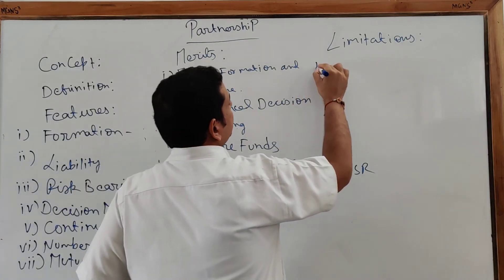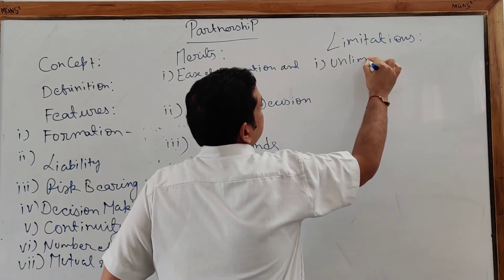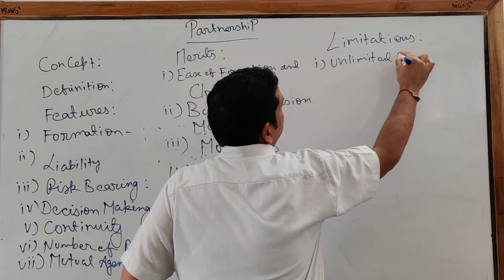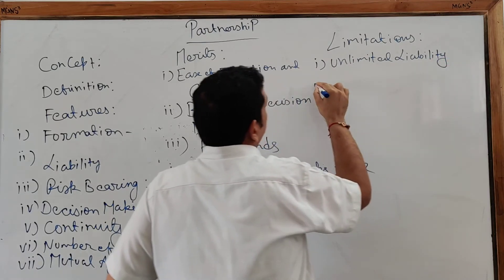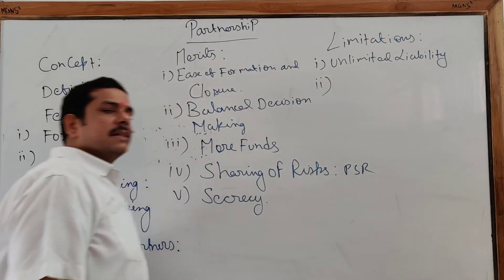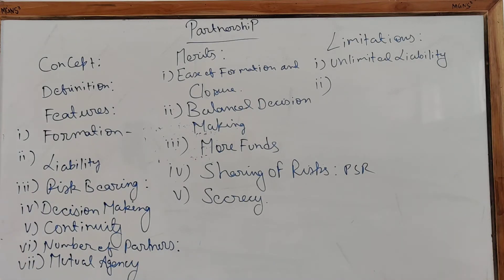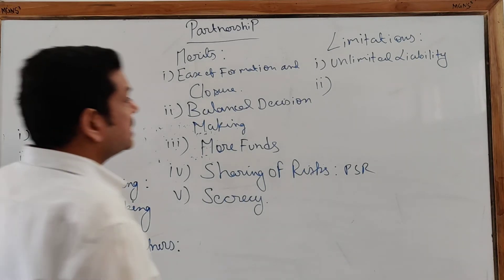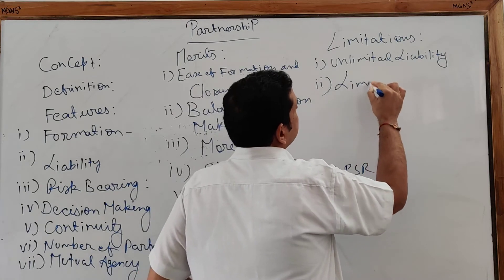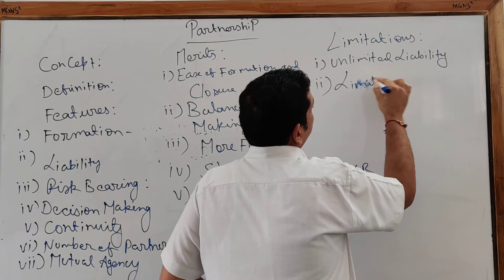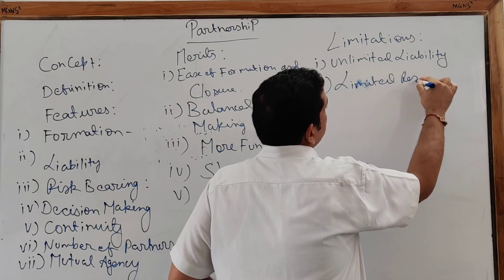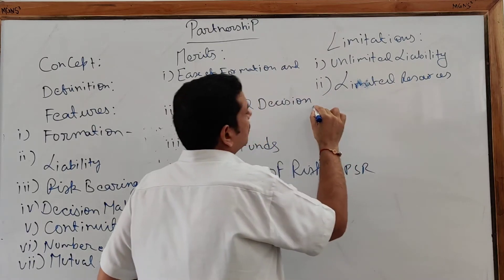Limitation 1 — Unlimited Liability: The biggest limitation of partnership is unlimited liability. Every partner is bound by this concept — in case of payment of debt or any liability, their personal assets will also be held responsible. Limitation 2 — Limited Resources: It is not necessary that a partnership firm always has plenty of funds; it may also suffer from the problem of limited resources.